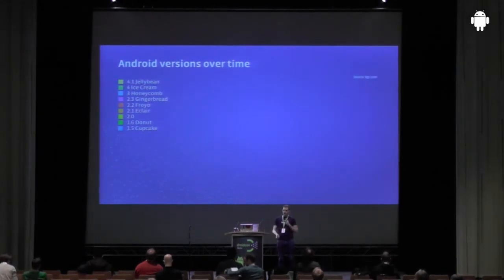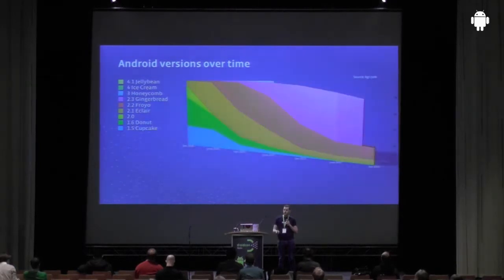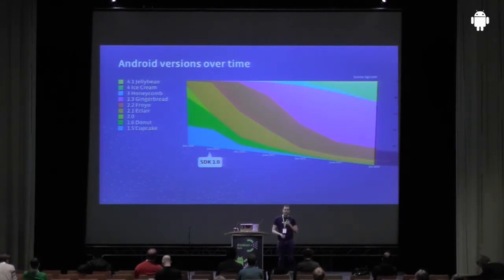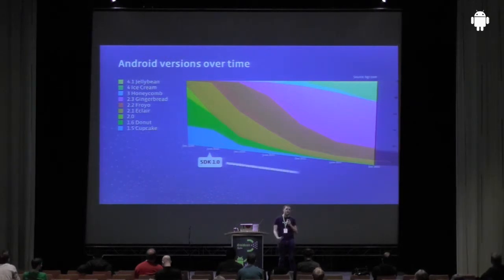When we released the first version of the SDK — somewhere around May 2010 — the Android ecosystem was entirely different to the way it is now. And basically we iterated on that slowly but surely to get us to the point that we are now.